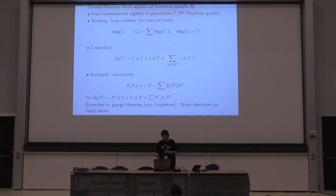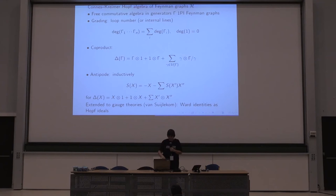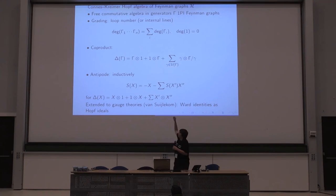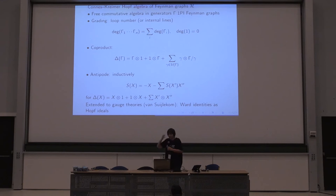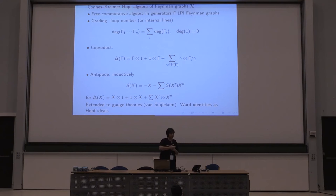You have this Hopf algebra of graphs — as an algebra, it's just a commutative polynomial algebra on graphs (with some restrictions). What is interesting and non-trivial is the co-product, which extracts subgraphs and takes quotient graphs. In renormalization, you have to worry about sub-divergences: not only eliminate divergences, but also consistently eliminate all sub-divergences. So you need to keep track of all subgraphs and quotient graphs at the same time — that's why the co-product is organized to do that.